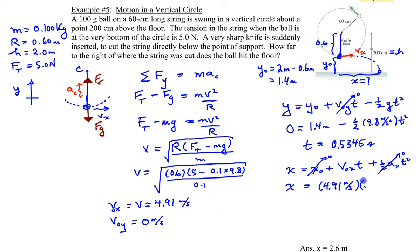And then multiply by the time that's in the air, 0.5345 seconds. And then we can find out what x is. And that gets you an answer of 2.625, or 2.63 meters.